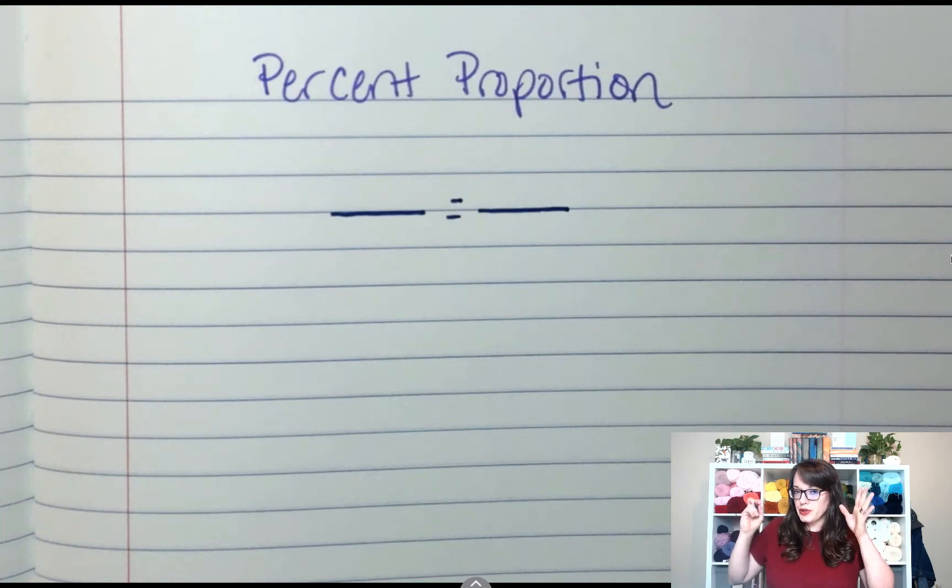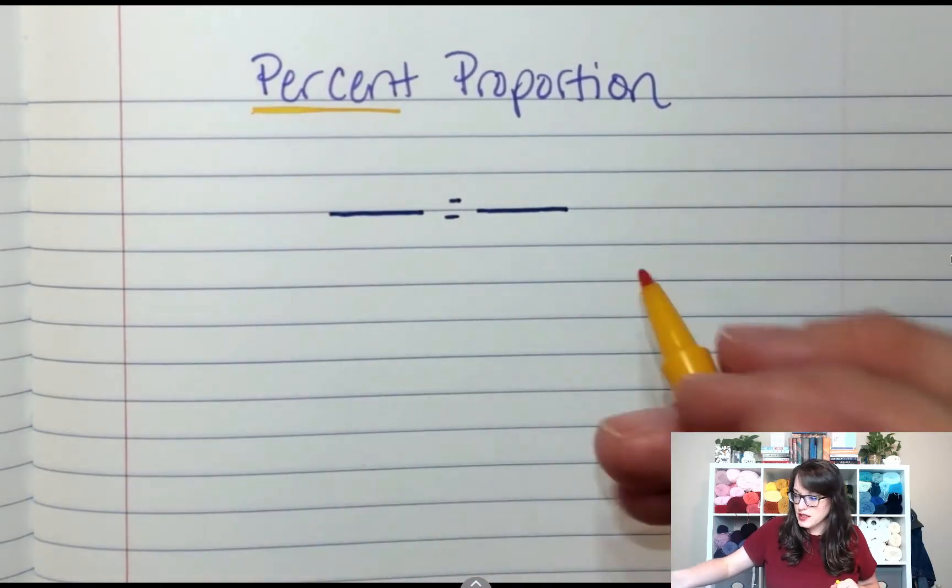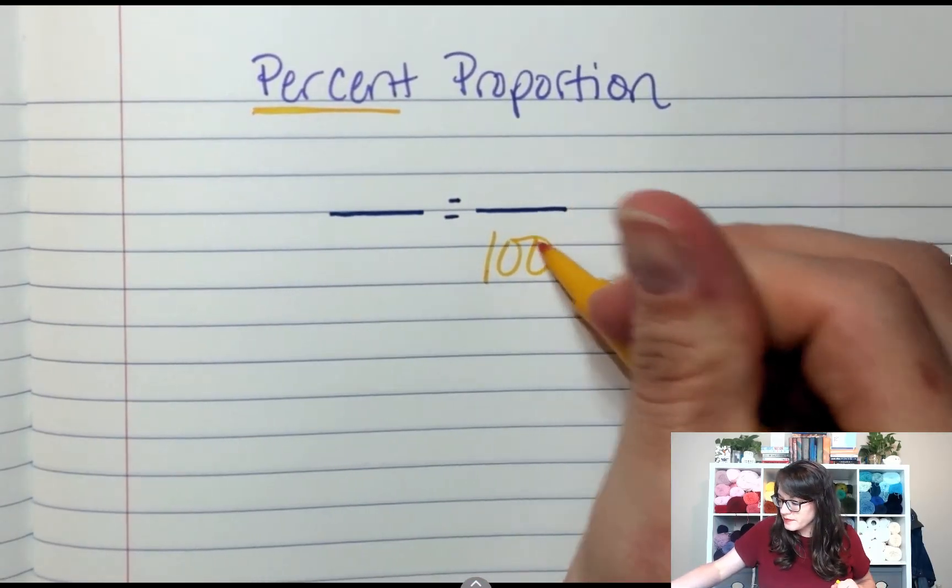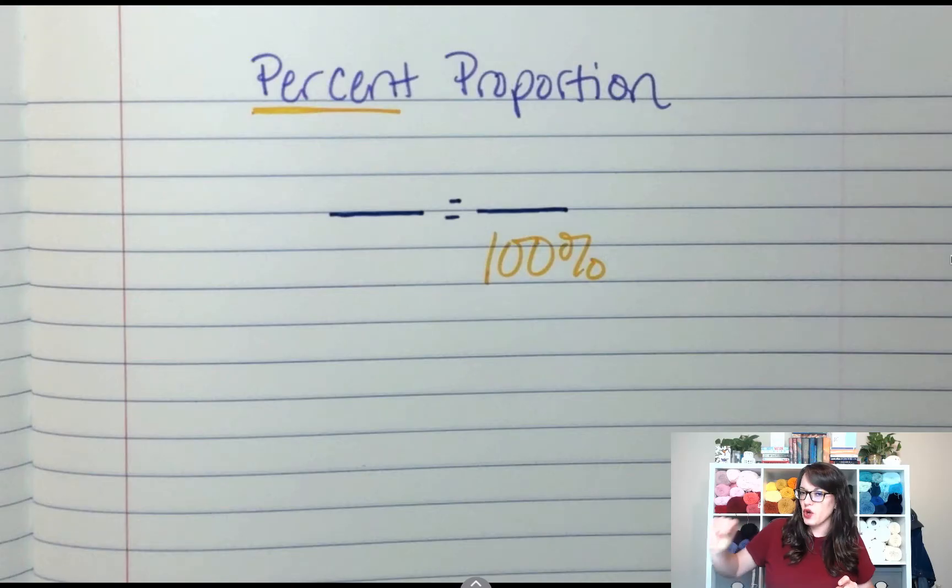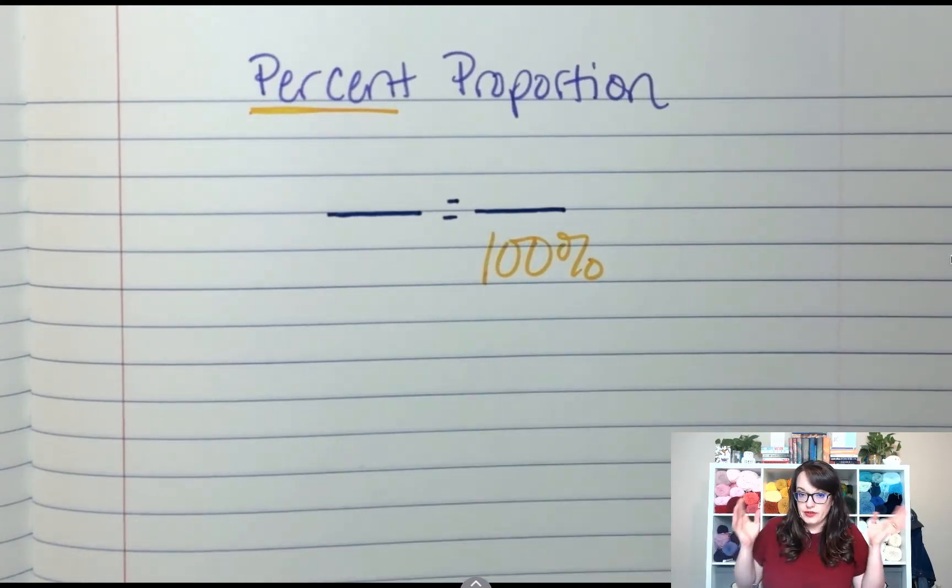When I'm dealing with the percent proportion, the percent part goes right here. That's my total, a hundred percent. Pretty much always, if you're dealing with percent proportion, a hundred goes right there. Now, on top of the hundred is the percent that is part of the total.